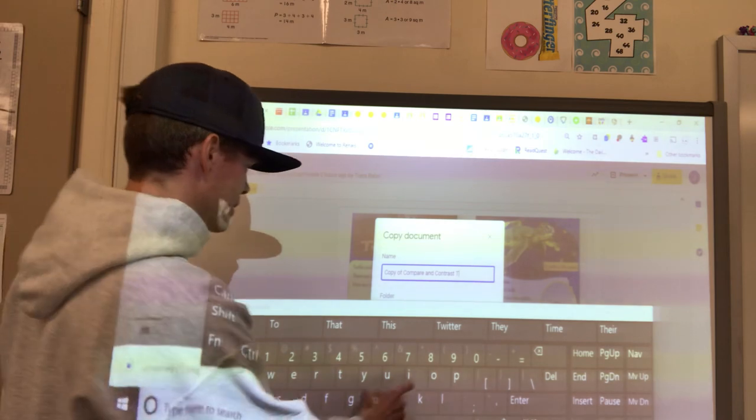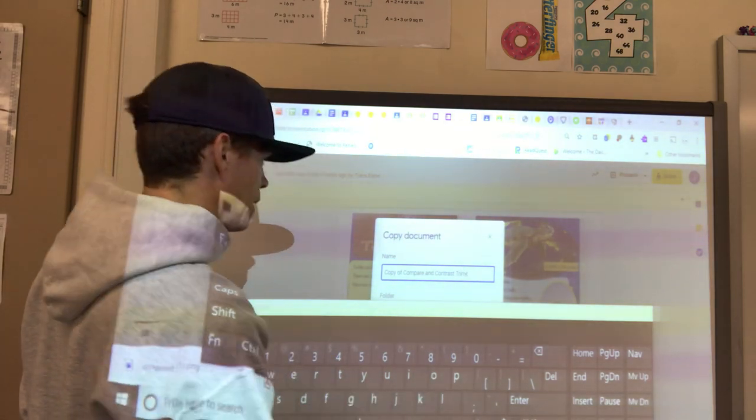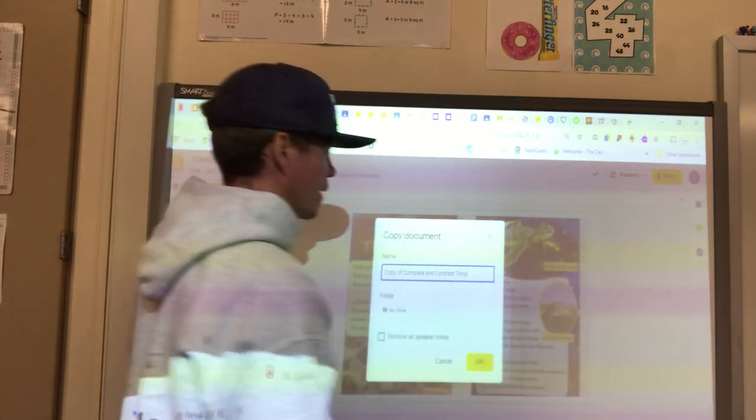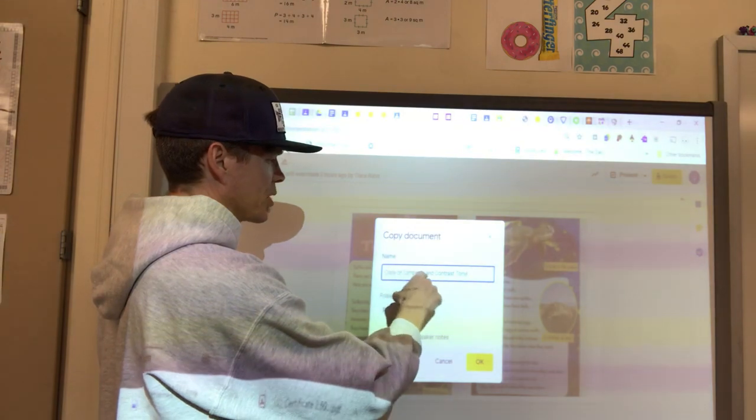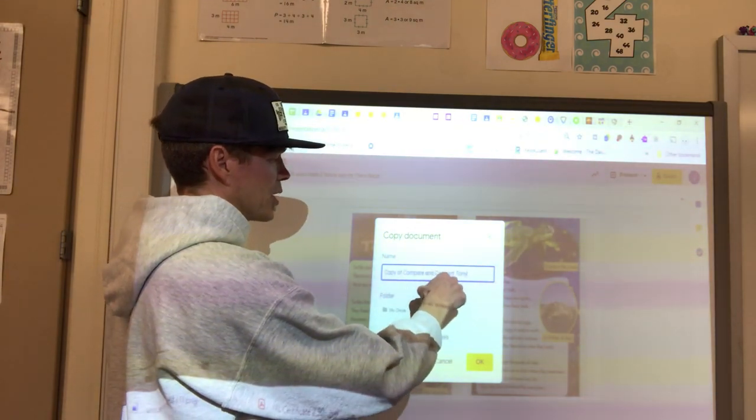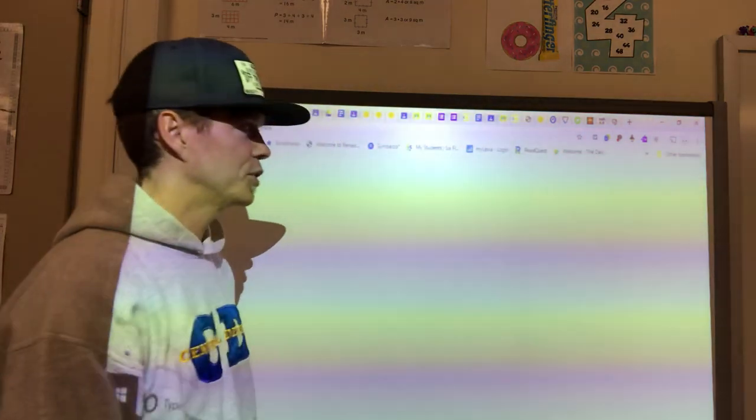Then I can exit out my keyboard here. You'll have your own keyboard and then once it's in, it'll say copy of compare and contrast and it has the name Tony. You'll have your name in there and you'll go ahead and push the word okay.